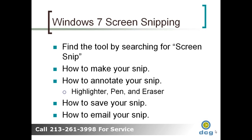In today's tutorial, I'm going to jump out to the Windows 7 screen utility and show you how to make a snip, how to annotate your snip using the highlighter, the pen, and the eraser. I'm going to show you how to save it and how to email it.